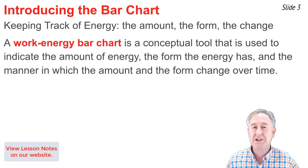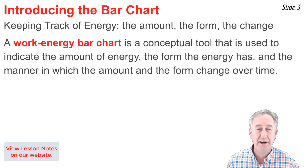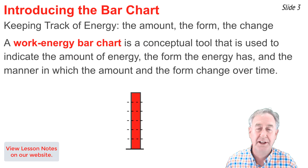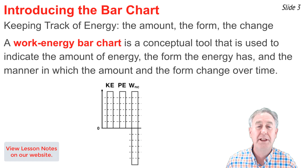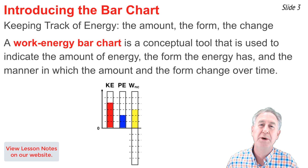It shows the amount of energy, the form that energy is in, and how the amount and form change between the initial and the final state of motion for that object. A vertical bar is used to indicate the amount of energy — a large bar indicates a large amount, and a short bar a small amount. Rather than a single bar, we have a set of bars: one for kinetic energy, one for potential energy, and one for the work done by non-conservative forces.